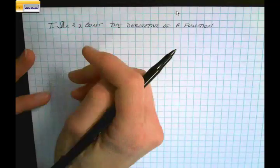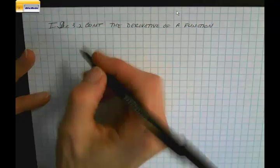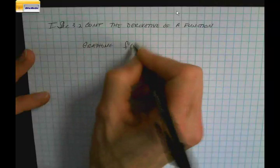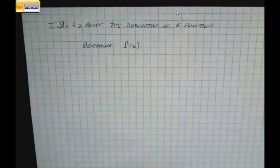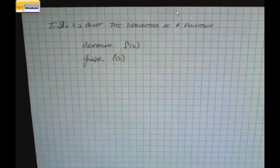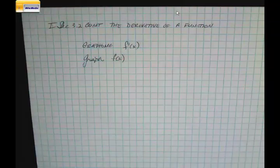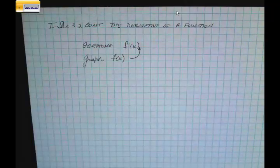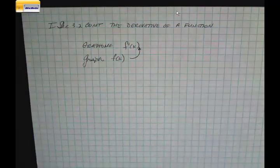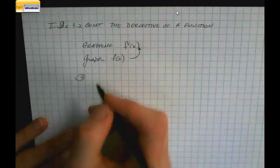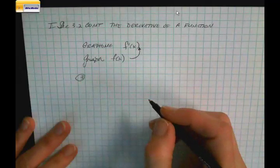Coming off from the last recording and the last class period, what we were doing was graphing the first derivative function. We show the graph of the regular function f(x), and then we build a table with the slopes of the tangent line to come back and graph the first derivative. It can be a little tricky — it's not something you can just match by guessing.